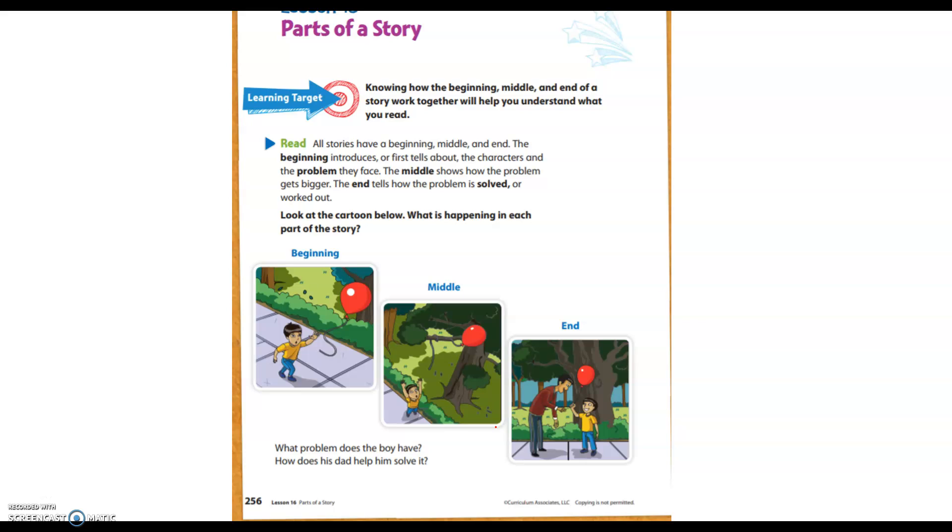Knowing how the beginning, middle, and end of a story work together will help you understand what you read. All stories have a beginning, middle, and end. The beginning introduces, or first tells about, the characters and the problems they face. The middle shows how the problem gets bigger. The end tells how the problem is solved or worked out. Let's look at these pictures below. In the first picture, I see that the little boy has a problem.